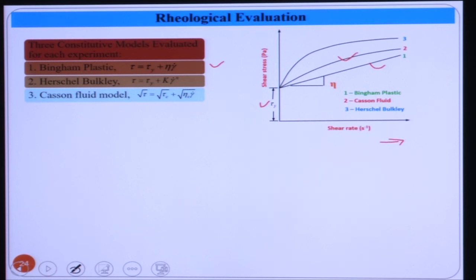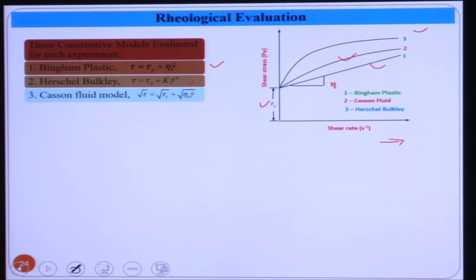MR fluid can also be represented by the Herschel-Bulkley model: τ = τ_y + k·γ̇^n. In this model, the flow index n governs whether the fluid is shear thickening, shear thinning, or a normal Bingham plastic. If n equals 1, it becomes a Bingham plastic fluid; when n is greater than 1, it is shear thickening; when n is less than 1, it is shear thinning.